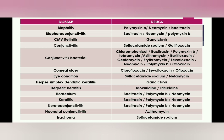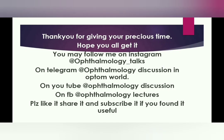For corneal ulcer, we use ciprofloxacin and levofloxacin. For general eye conditions, we use sulfacetamide sodium and natamycin. For herpes simplex dendritic keratitis, we use ganciclovir. For herpetic keratitis, we use idoxuridine and trifluridine. For hordeolum, we use bacitracin, polymyxin B, and neomycin. For keratitis and keratoconjunctivitis, we use bacitracin, polymyxin B, and neomycin. For neonatal conjunctivitis, we use azithromycin. For trachoma, we use sulfacetamide sodium. Hope you all understand.